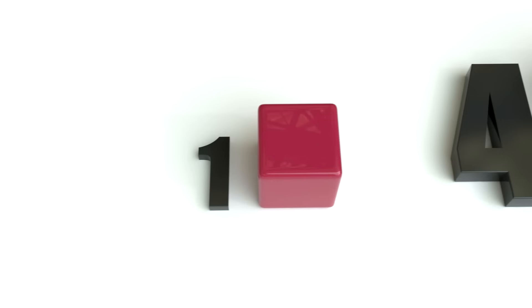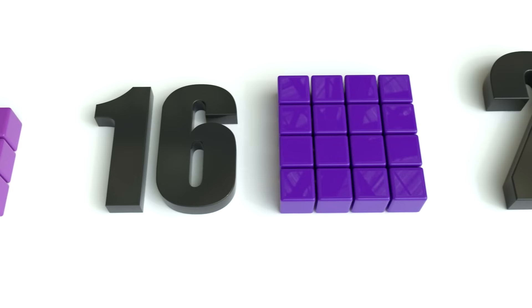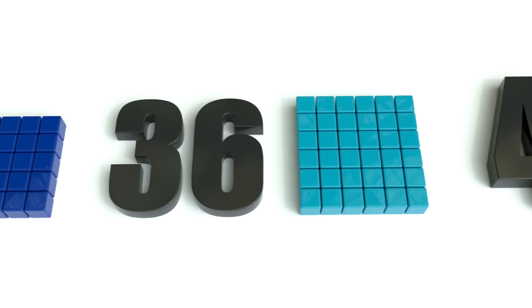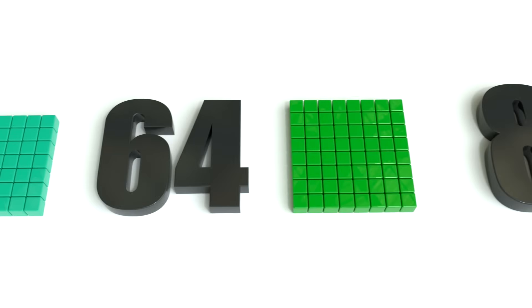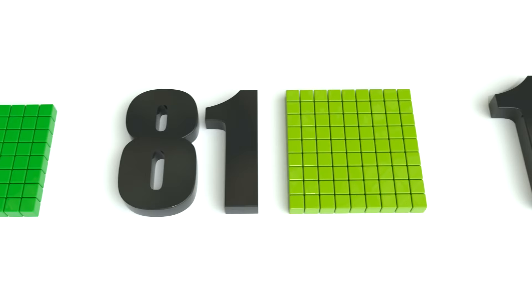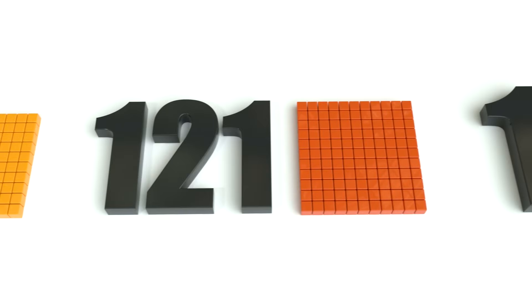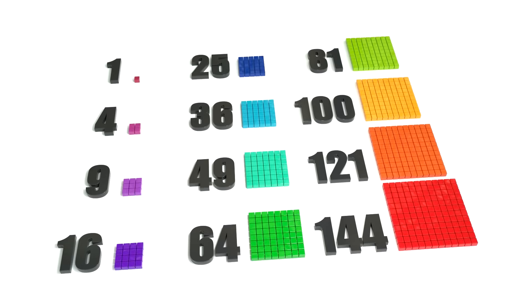One, four, nine and sixteen, twenty-five, thirty-six and forty-nine, sixty-four, eighty-one, one hundred and twenty-one, one hundred and forty-four. We are square numbers.